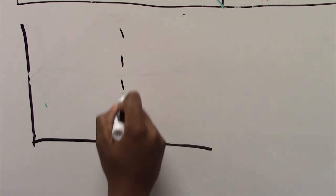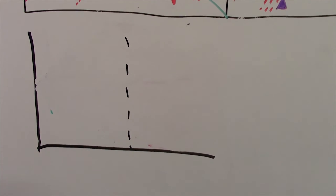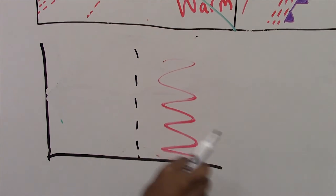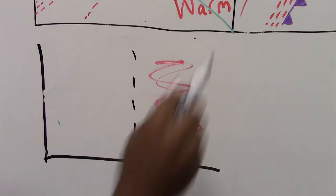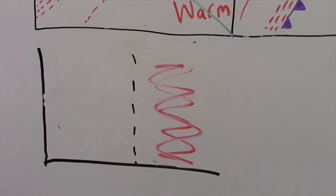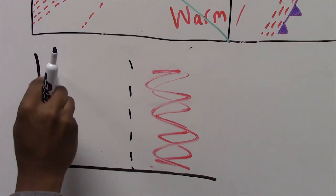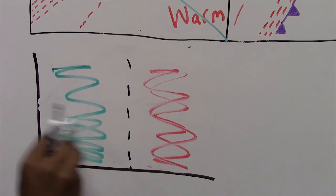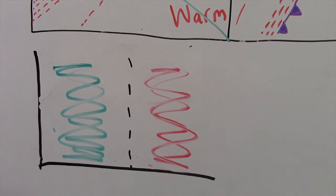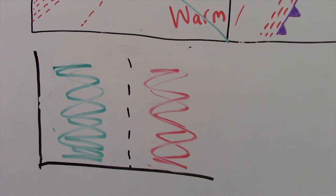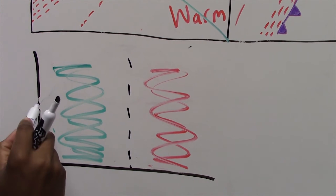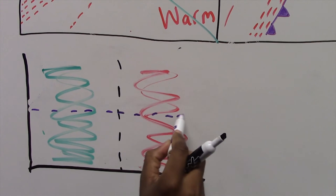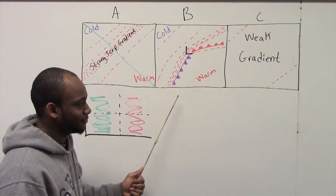So we have warm air over this side and we have cold air right here, which gives us a center of gravity about right along the middle, which means high potential energy.